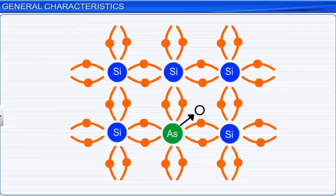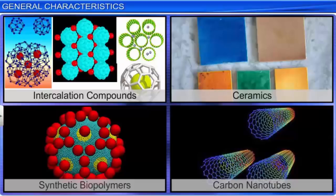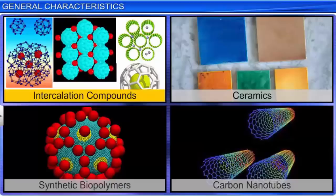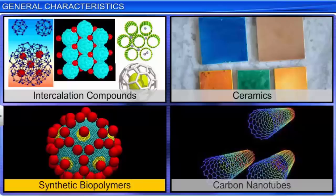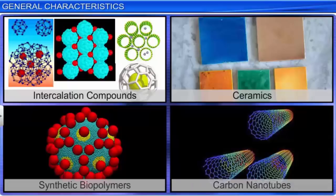Some solid materials prepared for applications in various fields are superconductors such as intercalated compounds of fullerenes, certain ceramics, synthetic biopolymers such as PHBV and PLA, and carbon nanotubes. Hence, the study of the structures of solids has immense significance in science and technology.